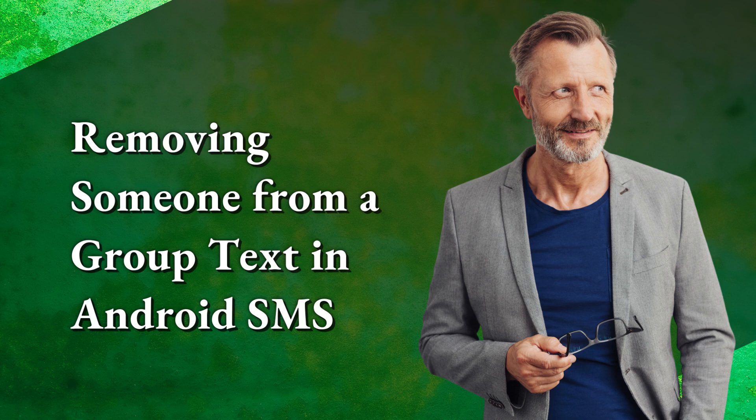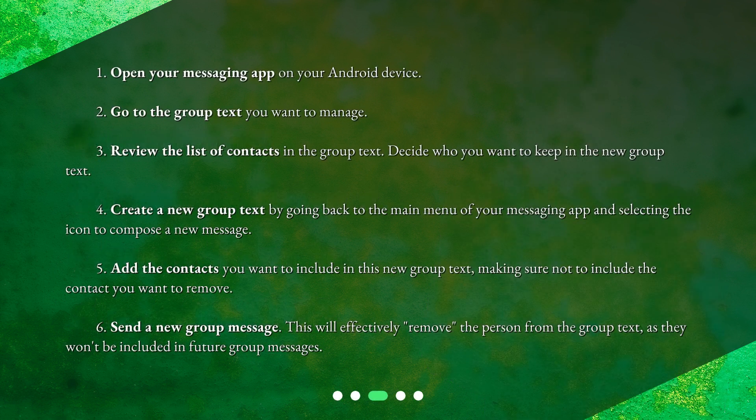Removing someone from a group text in Android SMS. Step 1: Open your messaging app on your Android device. Step 2: Go to the group text you want to manage. Step 3: Review the list of contacts in the group text and decide who you want to keep in the new group text. Step 4: Create a new group text by going back to the main menu of your messaging app and selecting the icon to compose a new message. Step 5: Add the contacts you want to include in this new group text, making sure not to include the contact you want to remove. Step 6: Send a new group message. This will effectively remove the person from the group text, as they won't be included in future group messages.